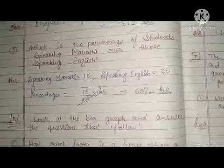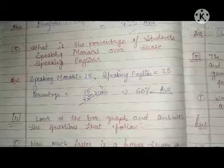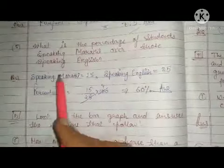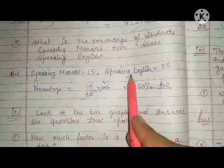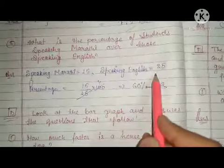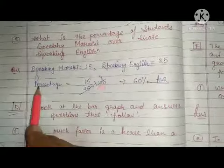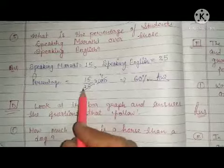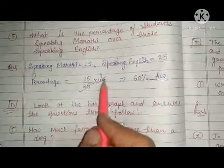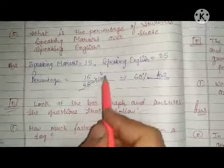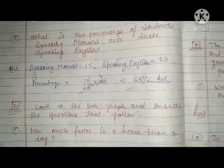What is the percentage of students speaking Marathi over those speaking English? Marathi speakers are 15 and English speakers are 25. We calculate: 15 upon 25 multiplied by 100. Simplifying, the answer is 60 percent.